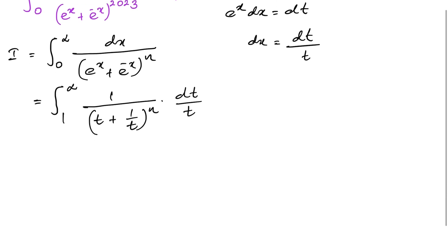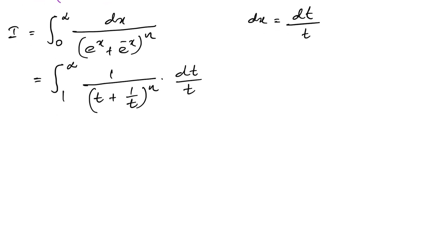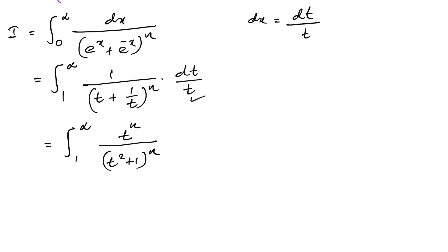Now we simplify. Taking common denominator, (t + 1/t) = (t² + 1)/t, so (t + 1/t)^n = (t² + 1)^n / tⁿ. The integral becomes the integral from 1 to infinity of t^(n−1) / (t² + 1)^n dt.